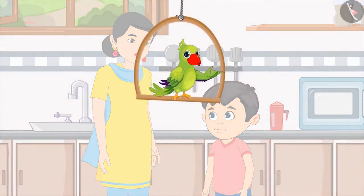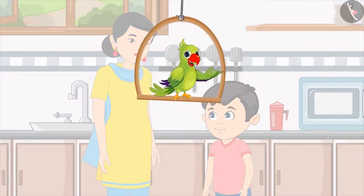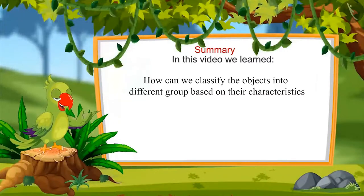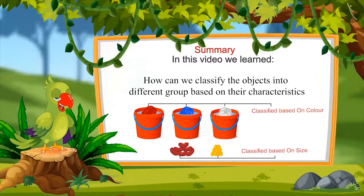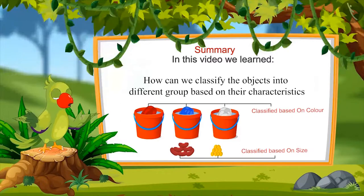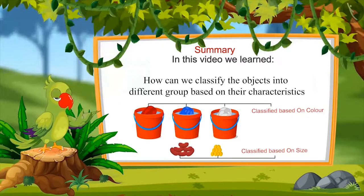So children, did you enjoy seeing the examples of classification? In this video, we have learned how we can classify objects based on their characteristics like colour and shape, and thus how to create different groups of them. I hope you have enjoyed and understood this topic properly. Bye, friends.